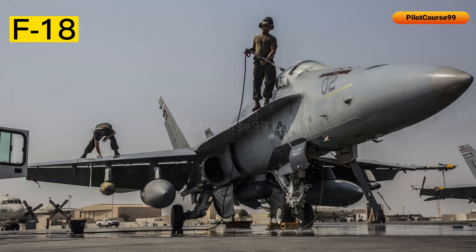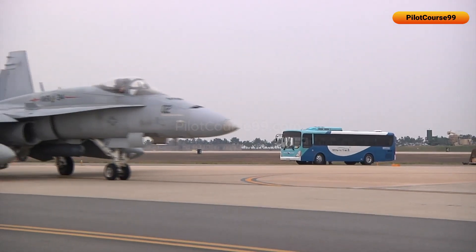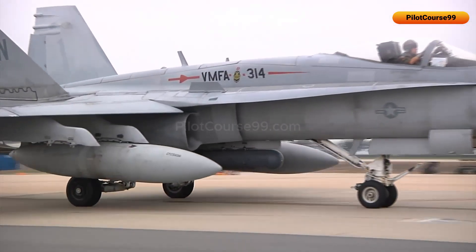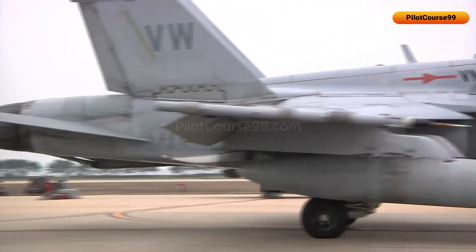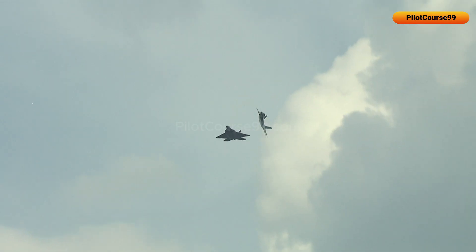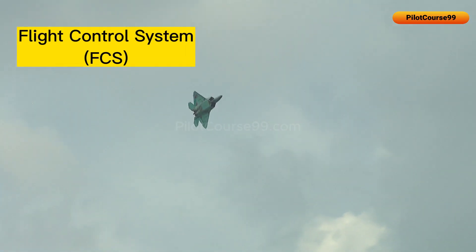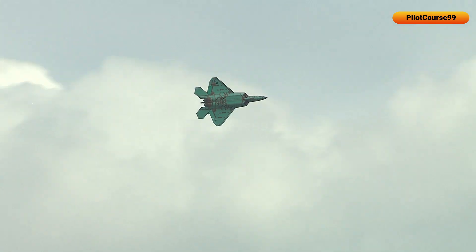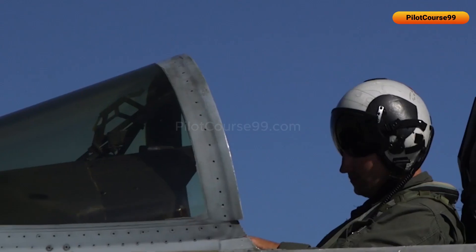In the F-18, angle of attack sensors are usually located on the leading edge of the wings, near the wing root. The F-18 also has an AOA indexer, which displays green, yellow, and red lights to help the pilot maintain the correct angle of attack. It also has a flight control system that automatically adjusts the aircraft's control surfaces to maintain a safe and stable AOA.